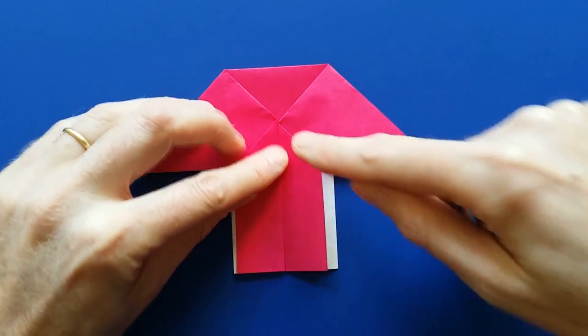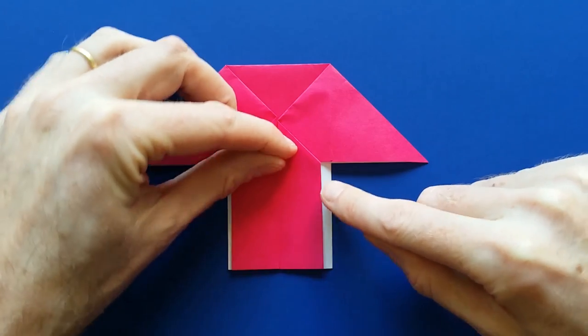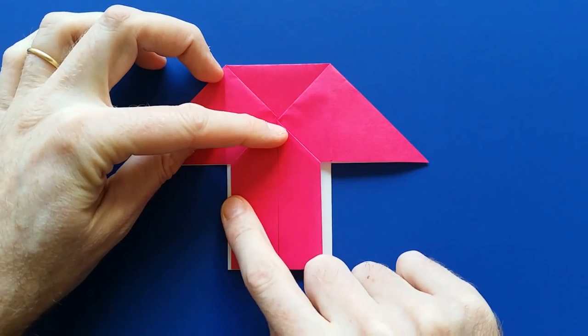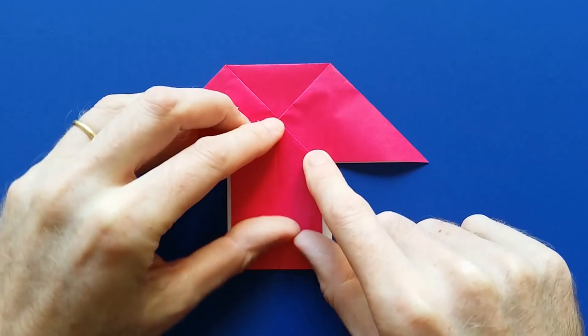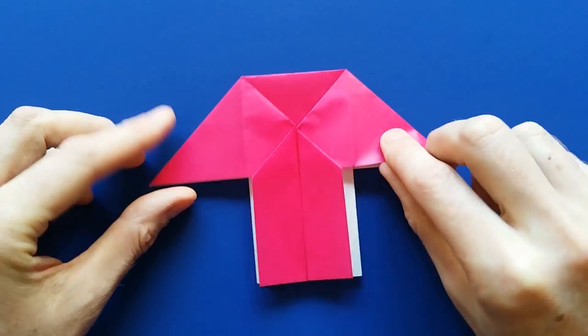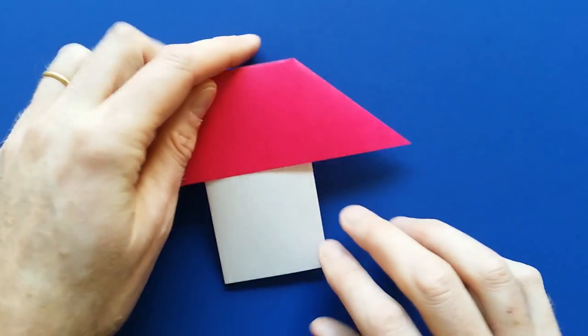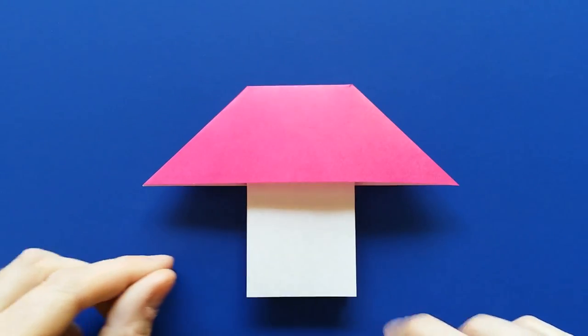So as you can see, this is not exactly in the middle. This part is larger than the white part here, but it doesn't matter, don't worry. So turn the model to the other side, and you have something that looks like a mushroom.